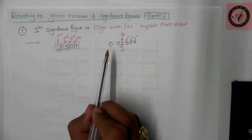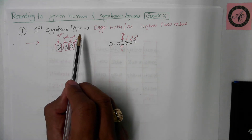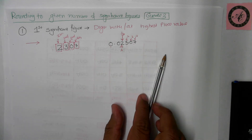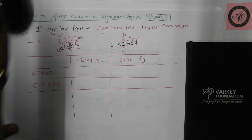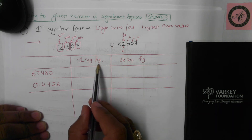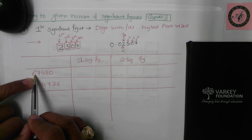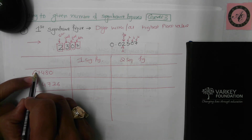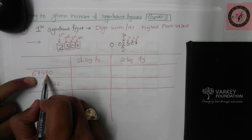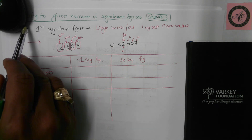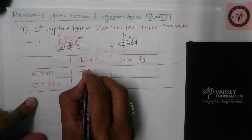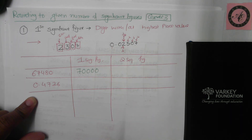The technique is: identify the significant figure you want to round to, then round to that place value. For example, the first significant figure of 67,480 is six, at the ten-thousands place. The fate of six is decided by seven — seven makes six go up to seven. So 67,480 rounded to one significant figure is 70,000.